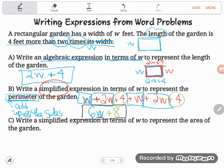Be careful not to try to add W's and plain old numbers. We can only combine like terms. I can't do any more addition. This is as simple as this is going to get. The perimeter is 6W plus 8 feet.